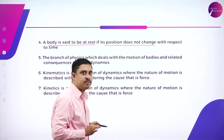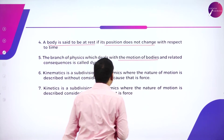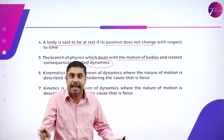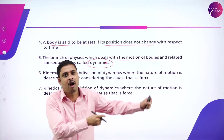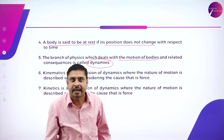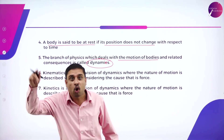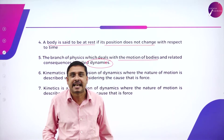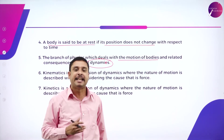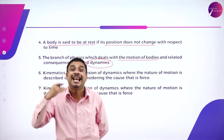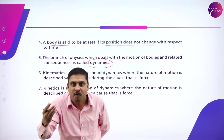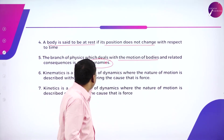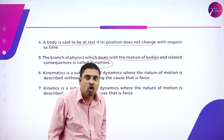The branch of physics which deals with the motion of bodies and related consequences is called dynamics. Kohli is a very dynamic player — if he were simply standing still, would you call him dynamic? No. He is known for quick running, throws, and instant batting — he is dynamic. Topics like speed, velocity, acceleration, and momentum of a moving body are all covered under the branch called dynamics.